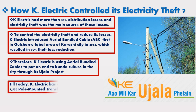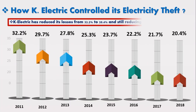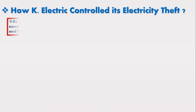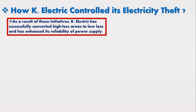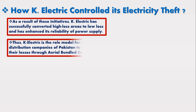Till today, K-Electric has converted over 7,500 pole-mounted transformers to ABC. K-Electric has reduced its losses from 32.2% to 20.4% and is still reducing its losses. As a result of these initiatives, K-Electric has successfully converted high-loss areas to low-loss areas and has enhanced its reliability of power supply. Thus, K-Electric is the role model for all distribution companies of Pakistan to reduce their losses through aerial bundled cables.